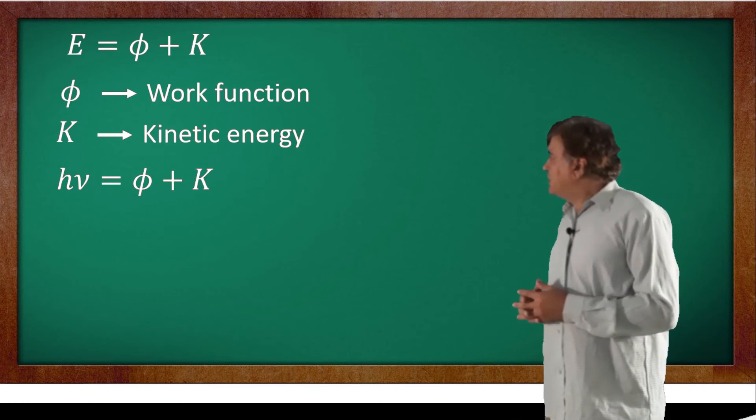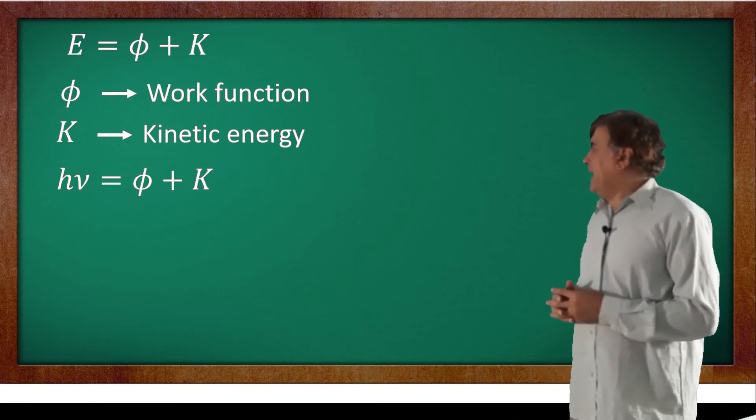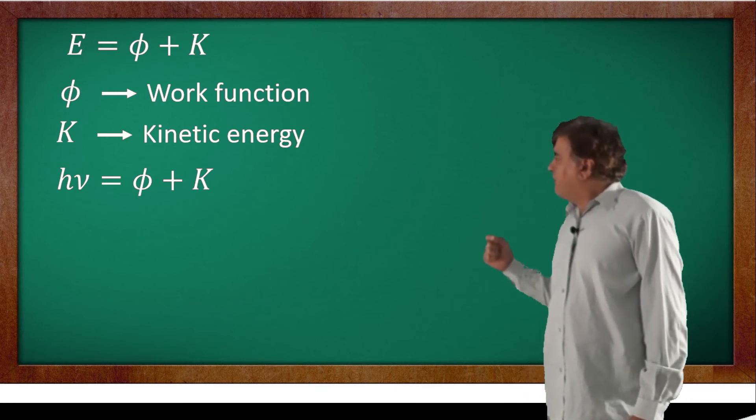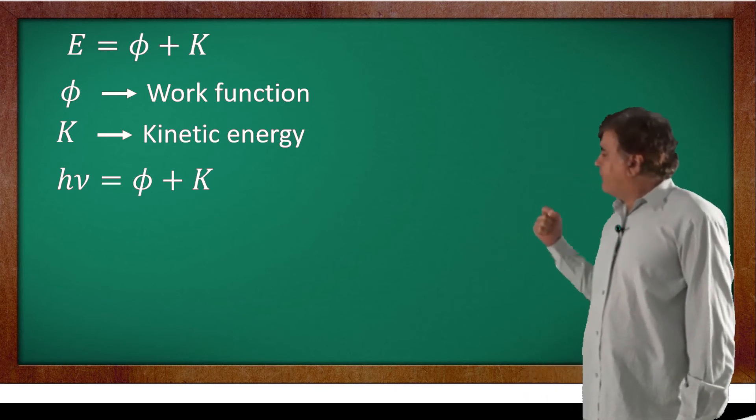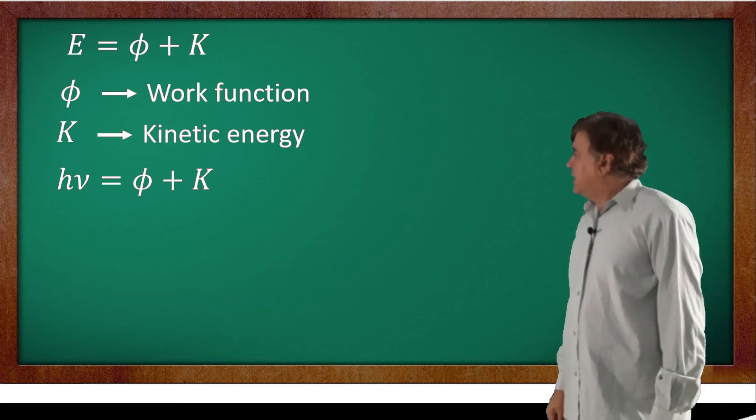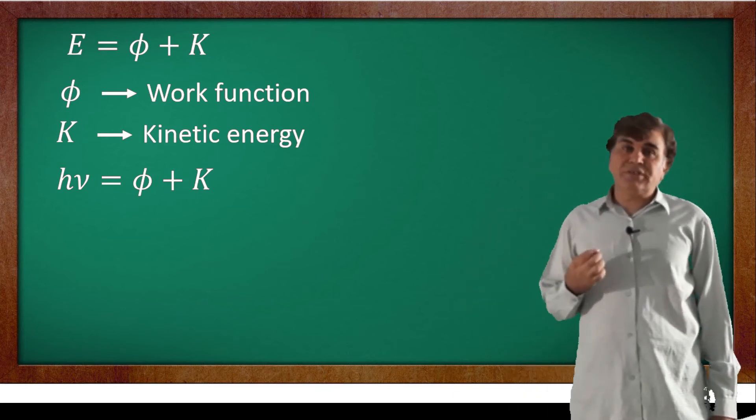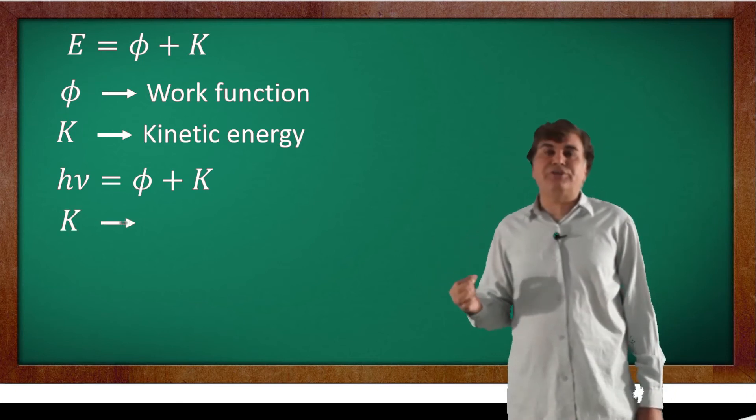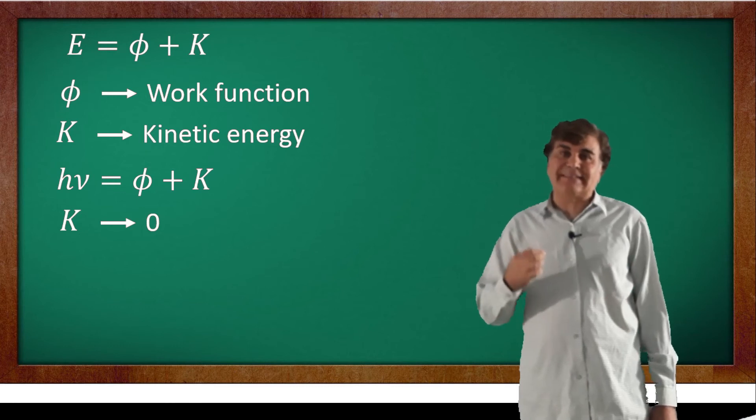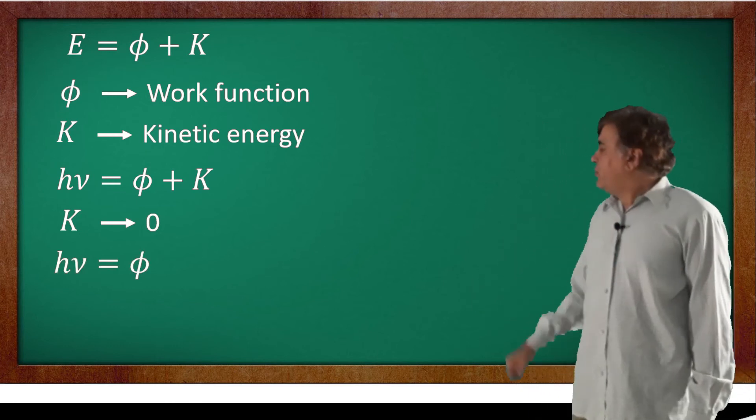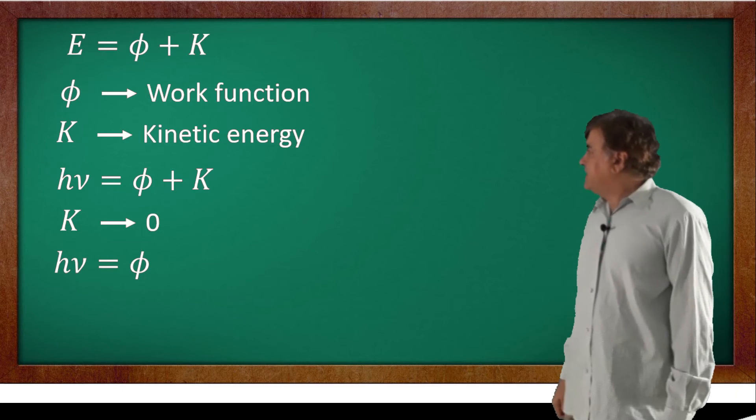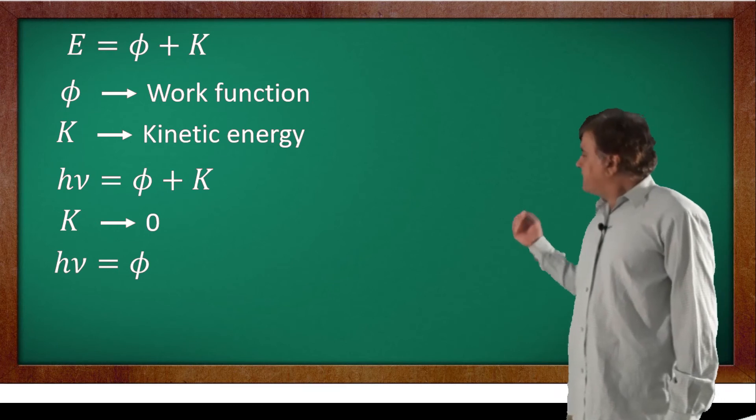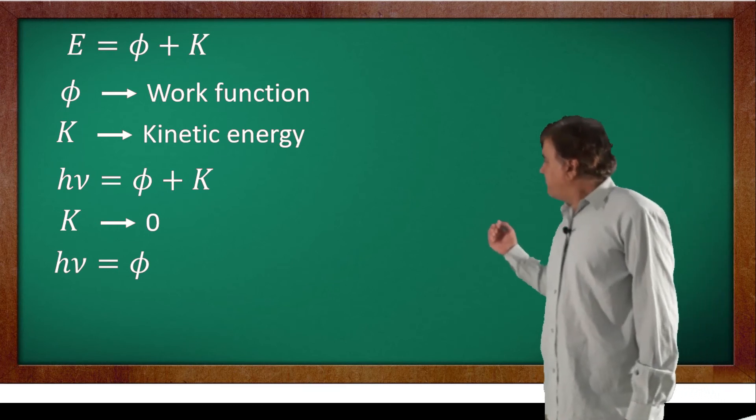It is clear from this equation that the kinetic energy of electron is a function of frequency of photons. If we keep on decreasing the frequency of incident photon till the point where the kinetic energy of the ejected electron is exactly equal to zero, then this equation can be expressed as hν = φ. Since this frequency of the incident photon corresponds to zero kinetic energy, we replace the ν with a special notation by putting a subscript zero with it.